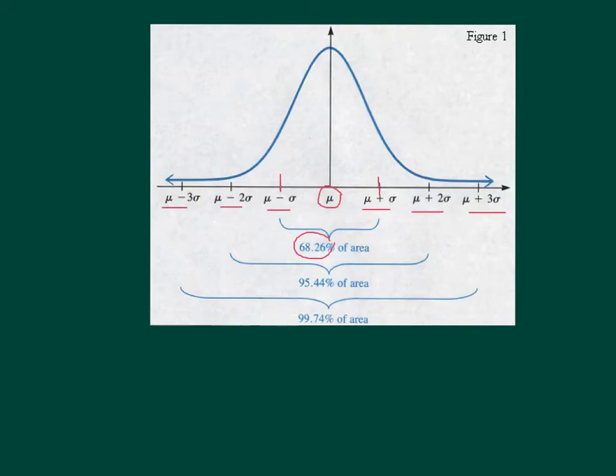95% of our data lie between negative two and two standard deviations from the mean, so they have z-scores between negative two and two. And finally, almost all our data lie within three standard deviations of the mean, so they have z-scores between negative three and three.